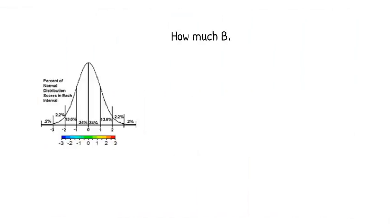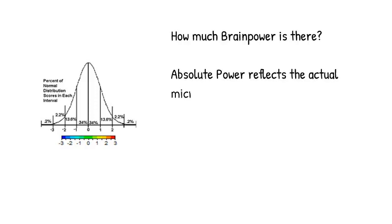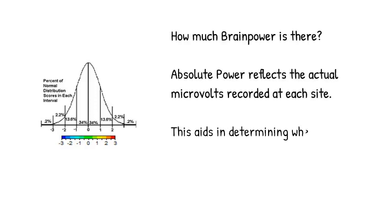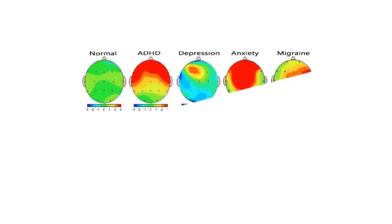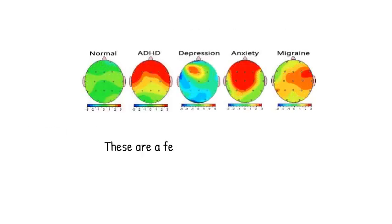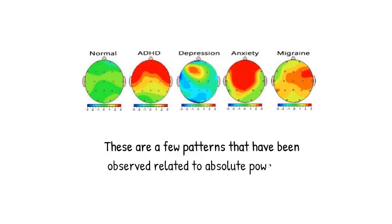The QEEG provides a measure of absolute power, allowing us to see how much power there is in each frequency range. There are patterns in absolute power that are related to specific conditions including ADHD, depression, anxiety, and migraine.